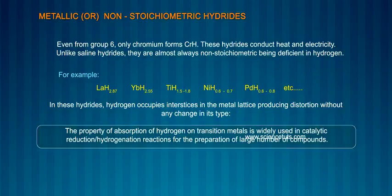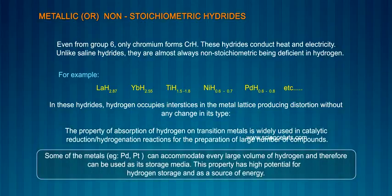Some metals, for example palladium and platinum, can accommodate very large volumes of hydrogen and therefore can be used as storage media. This property has high potential for hydrogen storage and as a source of energy.